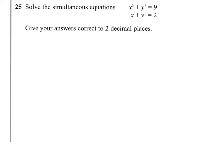So we're trying to solve these simultaneous equations: x squared plus y squared equals 9, and x plus y equals 2. We've got to give our answers correct to two decimal places.